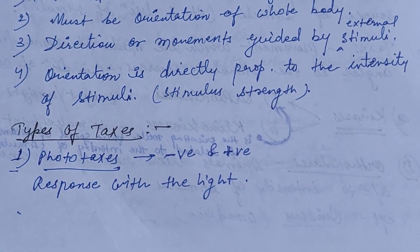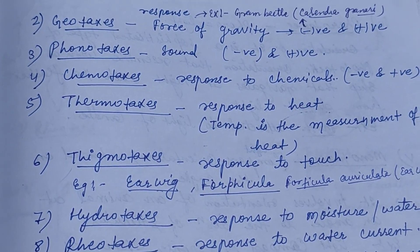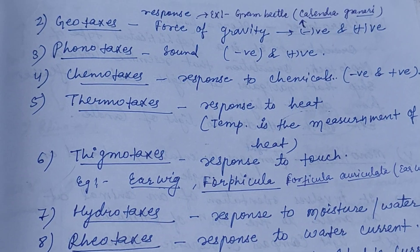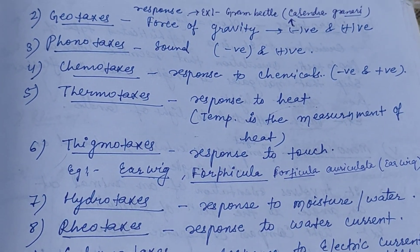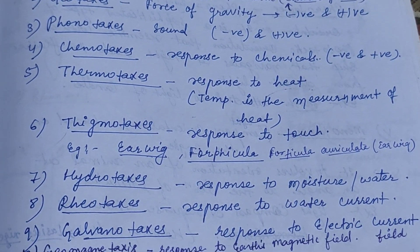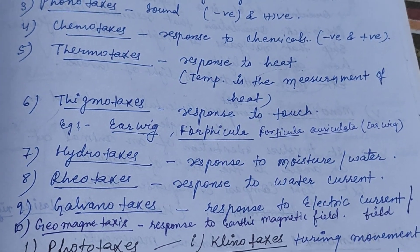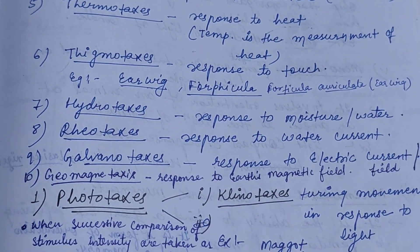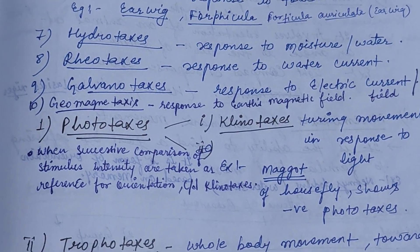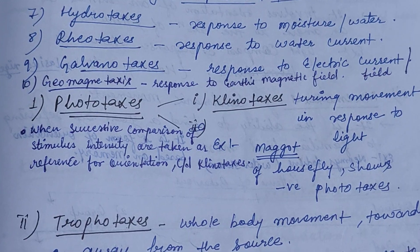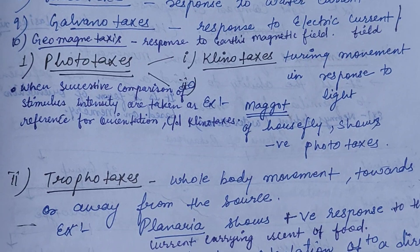Types of taxis: phototaxis — negative and positive response to light. Geotaxis — based on the force of gravity, may be negative or positive; example, the grain beetle (Calendra granaria) shows negative geotaxis. Phonotaxis — related to sound production. Chemotaxis — response to chemicals. Thermotaxis — response to heat. Thigmotaxis — response to touch. Hydrotaxis — response to moisture or water. Rheotaxis — response to water current. Galvanotaxis — response to electric current. Geomagnetic taxis — response to Earth's magnetic field.